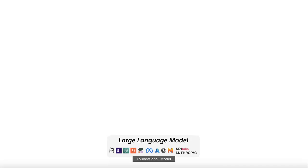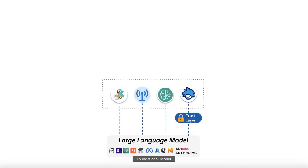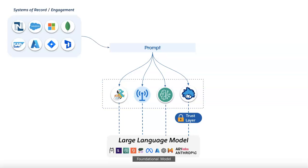If you want to connect to any LLM provider, you will use one of these four connectors: MuleSoft iChain, Influence, Bedrock, or Einstein of the Mac project. They allow you to connect to different LLM providers and their foundational models. They work on a prompt received from a system of record, engagement, or a chat UI, and you can then govern the prompt itself.